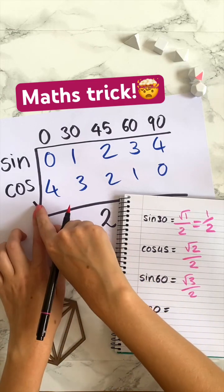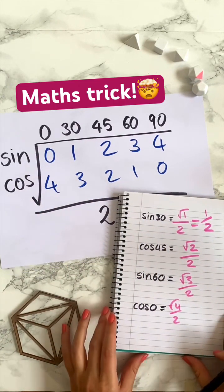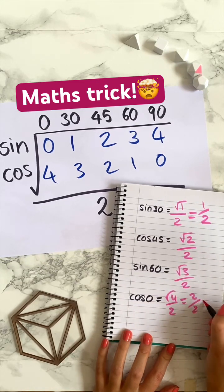How about cos 0? Well then we've got the square root of 4 over 2. We can simplify that, the square root of 4 is just 2 and so that's just 1.